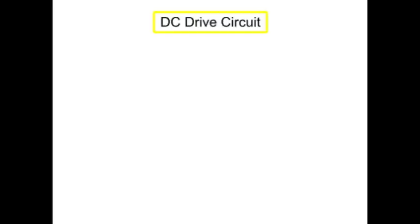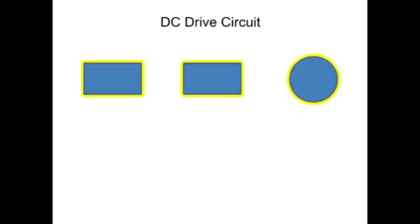A DC drive circuit is composed of three main components: an operator controller, a drive controller, and a DC motor.